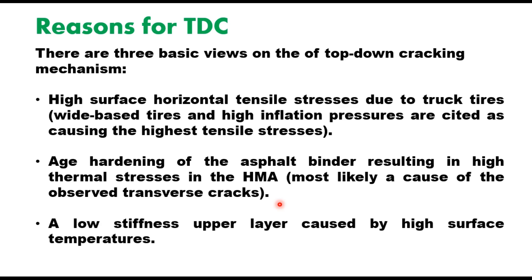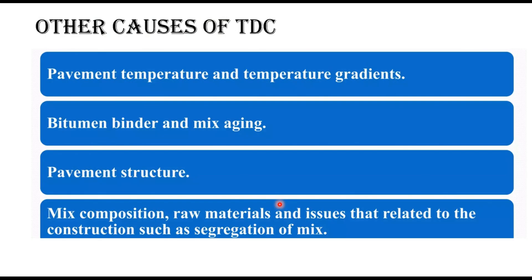In addition to these reasons, there are more contributing factors such as pavement temperature and temperature gradients, bitumen binder and mix aging, pavement structure, mix composition, raw materials, and construction-related issues such as segregation of the mix — meaning problems in mix design. If the mix has low shear strength, then top-down cracking is also likely to occur.